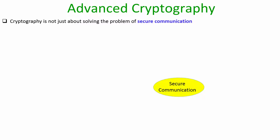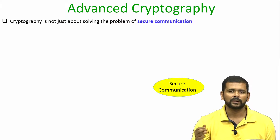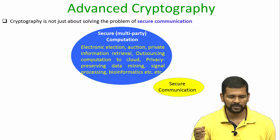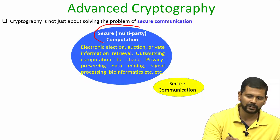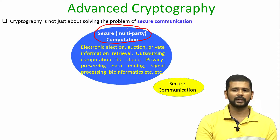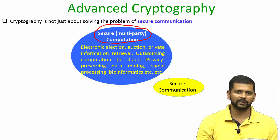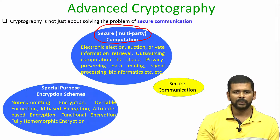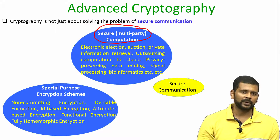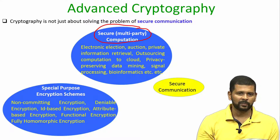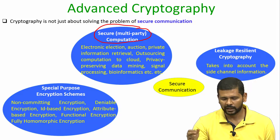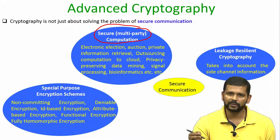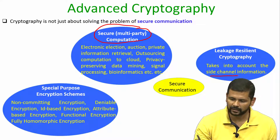As I said during my first lecture, cryptography is not just about secure communication — in this course we focused on that, but the umbrella of cryptography covers many advanced topics. For instance, we can do secure multiparty computation, where mutually distrusting parties can perform any computation securely without revealing their data. We can design special-purpose encryption schemes like non-committing encryption, deniable encryption, fully homomorphic encryption, and functional encryption. There is also an entire branch called leakage resilient cryptography, which accounts for side channel attacks and side channel information.